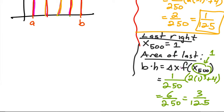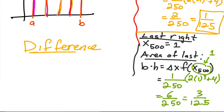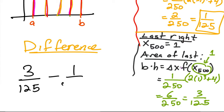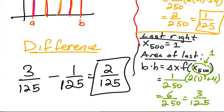The difference between the right-hand and left-hand approximation is 3 over 125 minus 1 over 125, which is 2 over 125. And that's it.